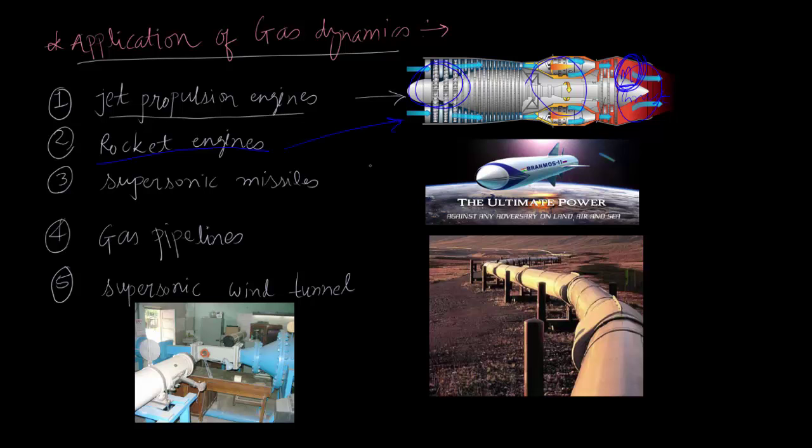...the oxidizer is stored inside the engine. The next application is supersonic missiles. For example, BrahMos.